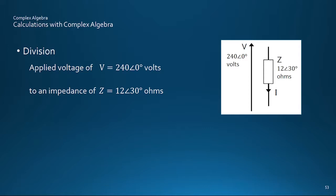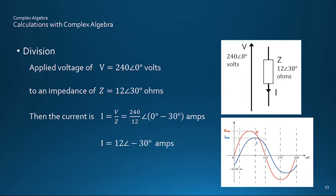An example of division is to find the current flowing through some impedance of 12 ohms at the phase angle of 30 degrees, where we can simply divide the applied voltage magnitude of 240 volts by 12 to find the current is 12 amps, and subtract the 30 degrees from zero to find the lagging phase angle of minus 30 degrees.